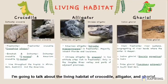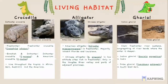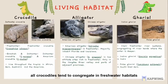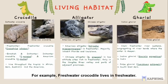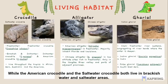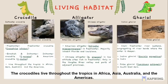My name is Lee Xiaojie. I am going to talk about the living habitat of the crocodile, alligator and gharial. All crocodiles tend to congregate in freshwater habitats such as rivers, lakes, wetlands, and sometimes in brackish water and saltwater. For example, freshwater crocodiles live in freshwater, while both the American crocodile and the saltwater crocodile live in brackish and saltwater areas. Crocodiles live throughout the tropics in Africa, Asia, Australia and the Americas.